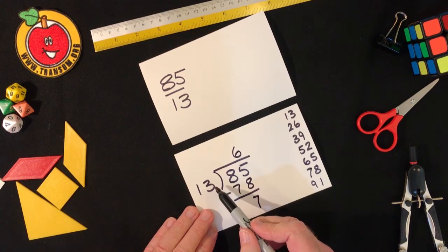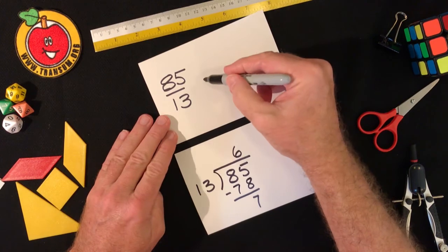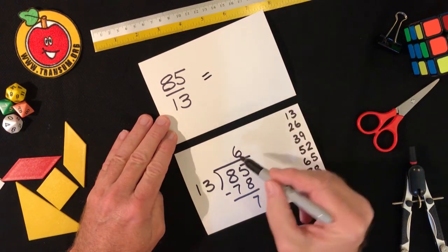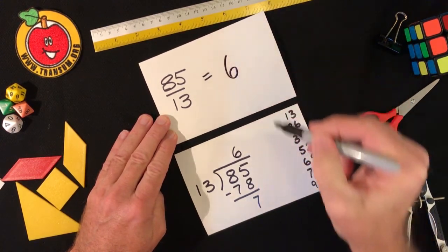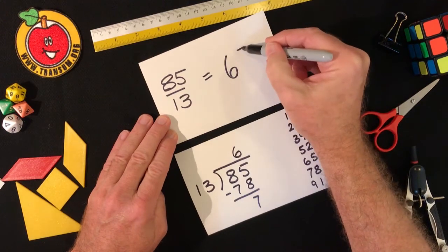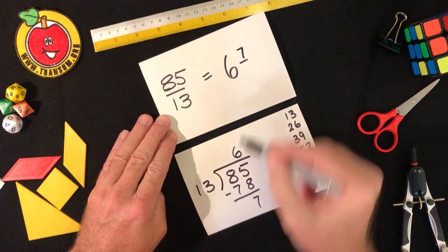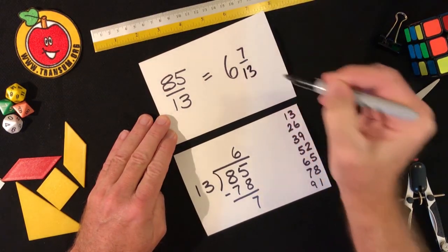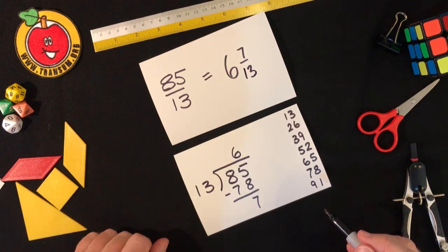I'll do a takeaway and I get the answer seven. So the answer is eighty-five thirteenths must be equal to six whole ones and seven thirteenths. And that's how you can do it if the numbers are large.